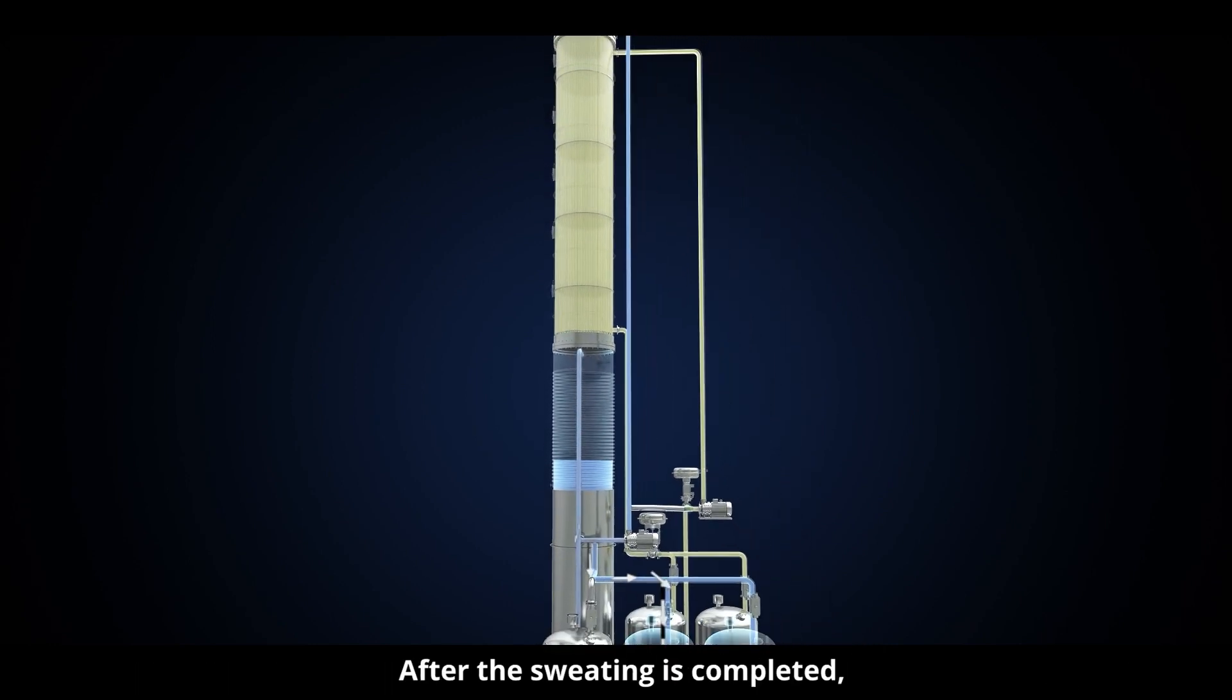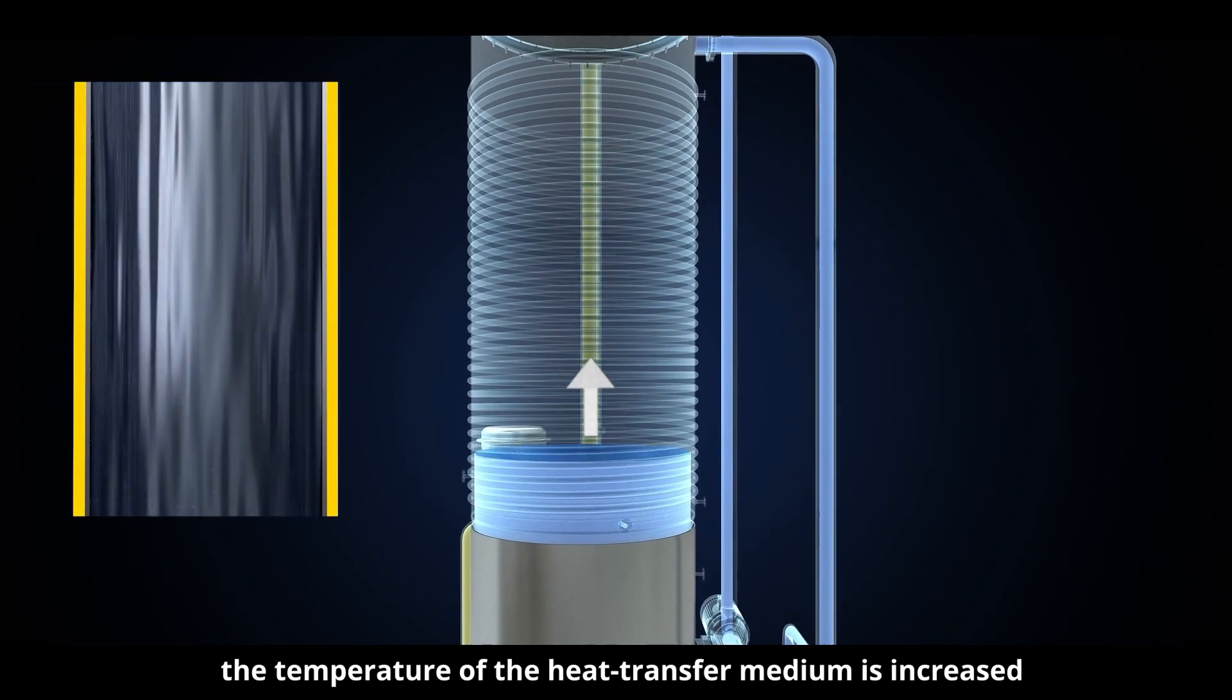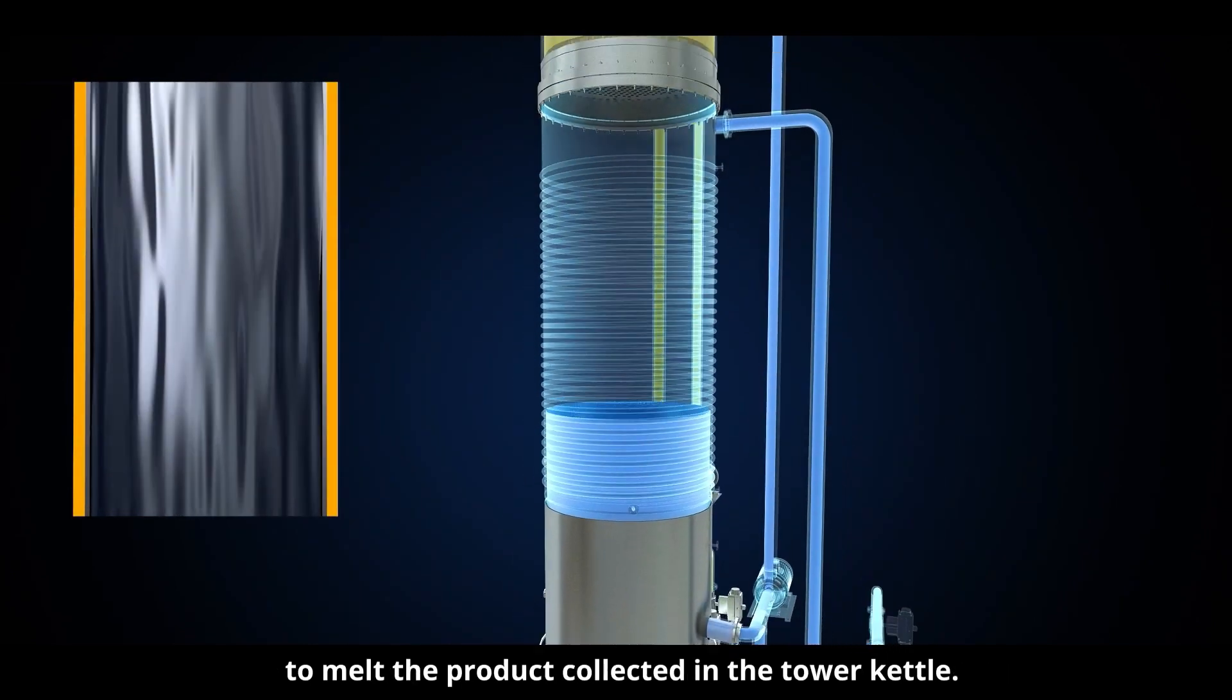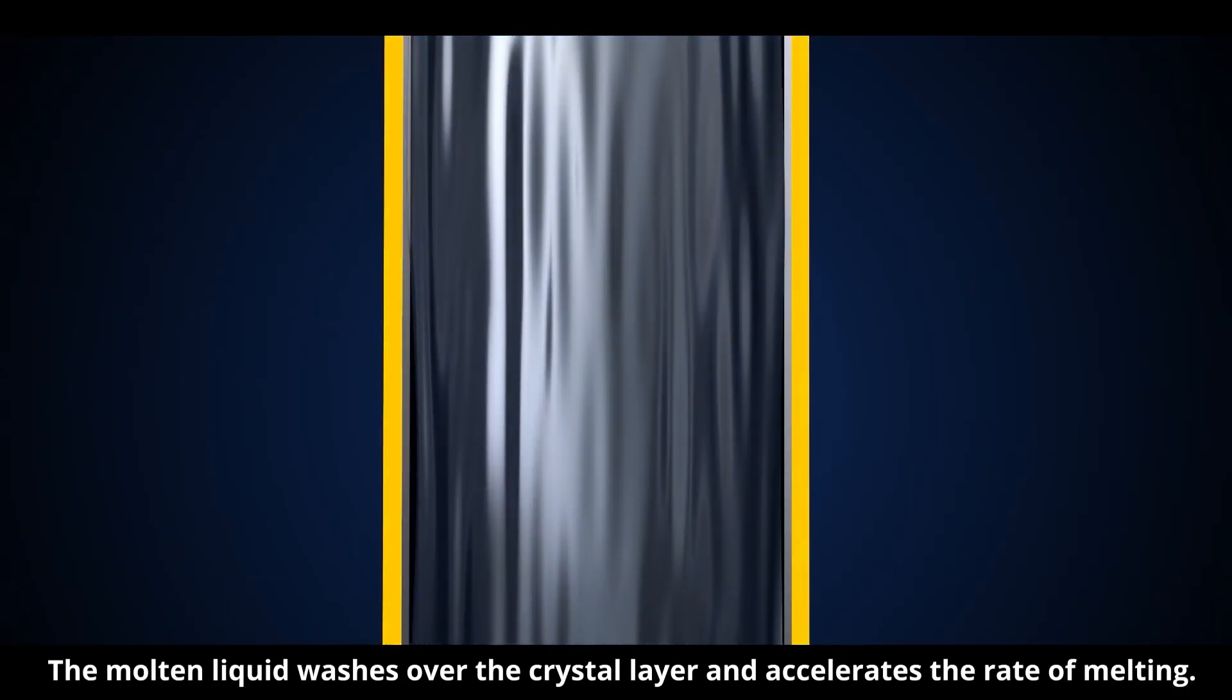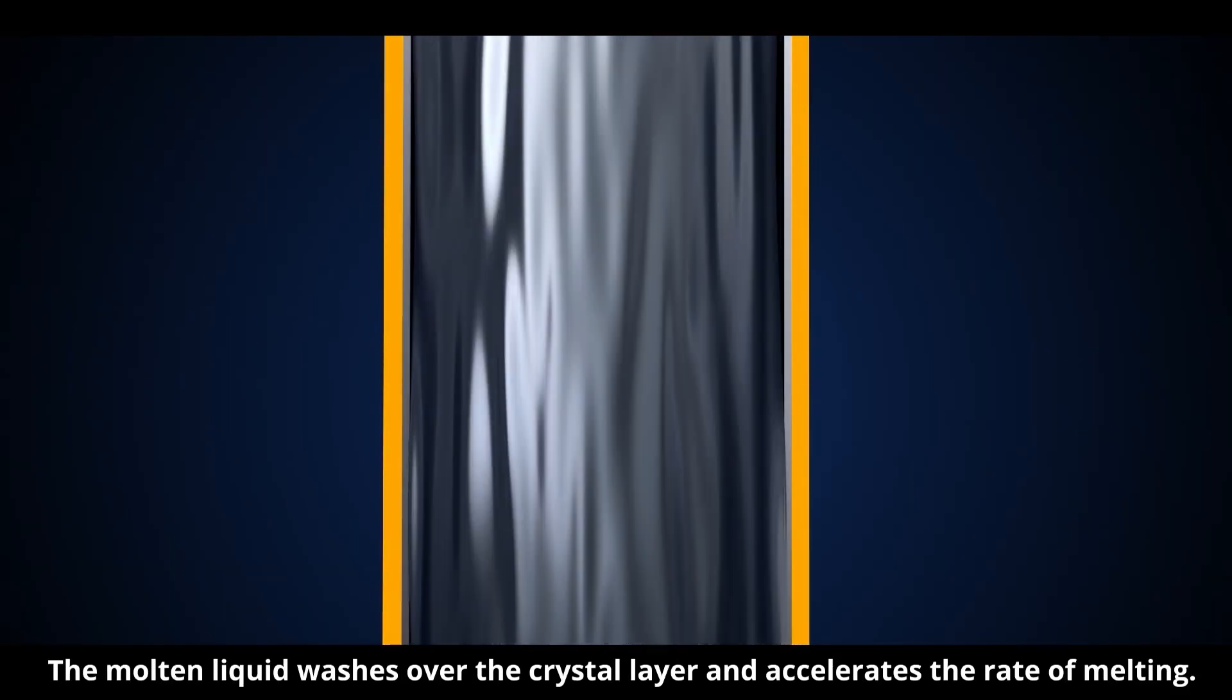After the sweating is completed, the temperature of the heat transfer medium is increased to melt the product collected in the tower kettle. The molten liquid washes over the crystal layer and accelerates the rate of melting.